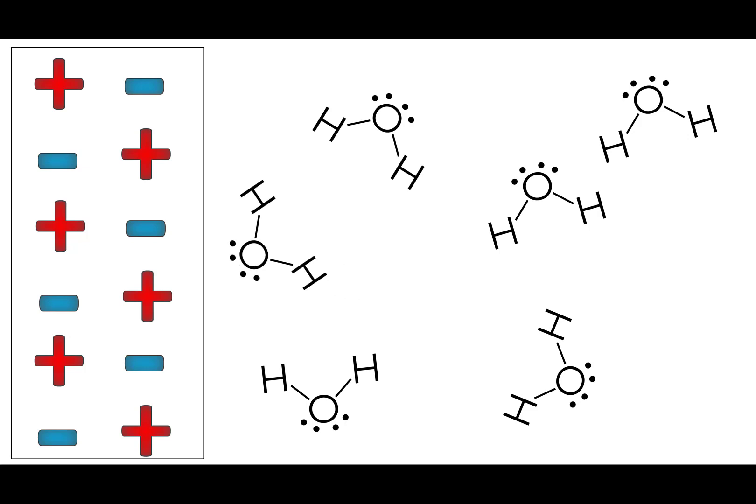So let's say that in the random course of movement one of these water molecules moves in towards the salt crystal. Now the oxygen is a little bit negative and the hydrogen is a little bit positive because water is polar, so it acts like a little magnet.